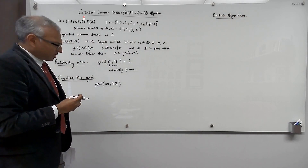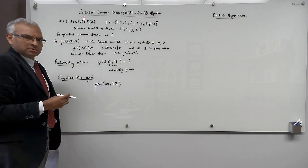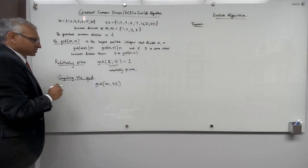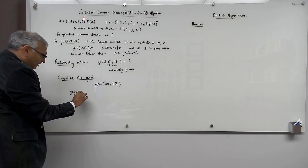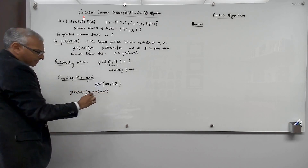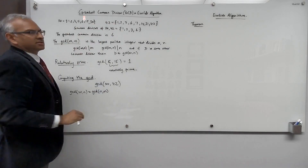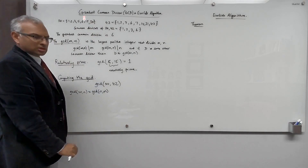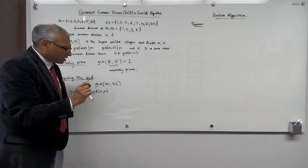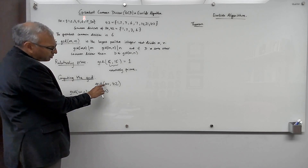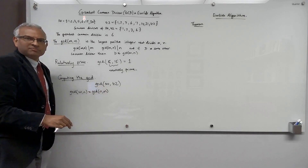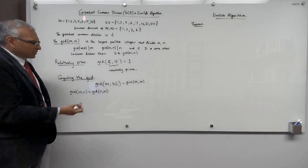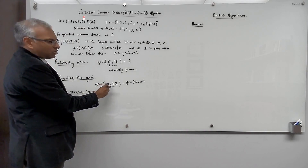The basic idea behind Euclid's algorithm is the following theorem. First, observe that the GCD of m and n is equal to the GCD of n and m — because you look at divisors of the two numbers, take the set of common divisors, and take the maximum, so it doesn't matter in which order you look at them. It's typical that when we formulate a GCD question we put the smaller number on the left and the larger number on the right. This is also the GCD of 42 and 30, but we typically assume the first input is smaller than or equal to the second.